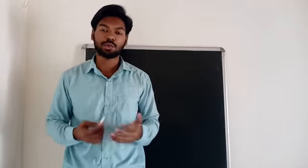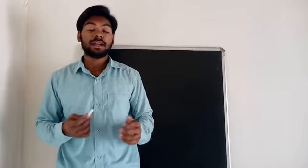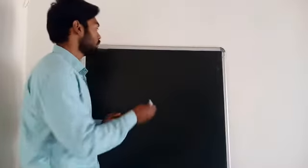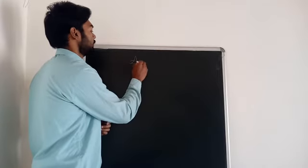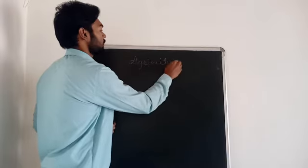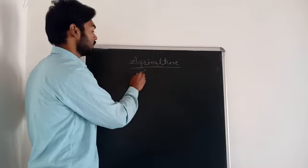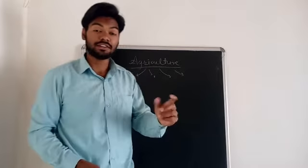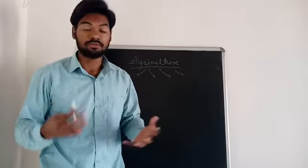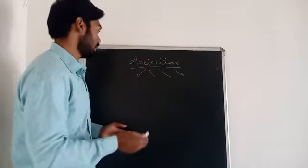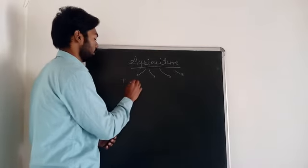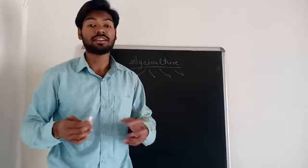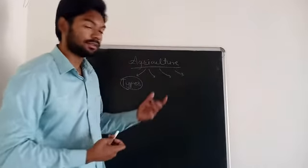Hello and welcome back to our new video. In the previous videos we learned a lot regarding agriculture — what agriculture is basically, and we saw that there are different types of allied activities like sericulture, pisciculture, apiculture, animal husbandry, and bee farming. Today we will be learning about the types of agriculture and the subtypes of farming.